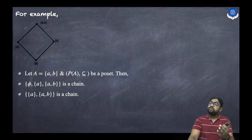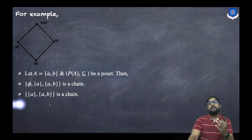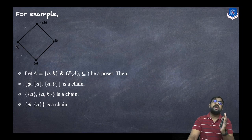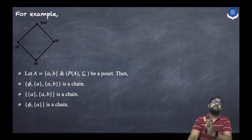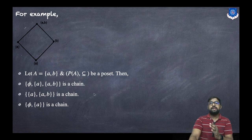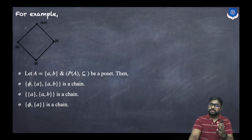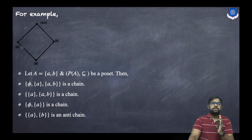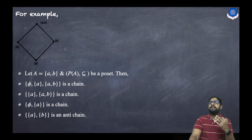In the same manner, {a} and {a,b} is also a chain — it is the smallest chain having two elements. Similarly, φ and {a} is a chain, φ and {b} is a chain, and φ, {b}, and {a,b} is also a chain. For an anti-chain, consider {a} and {b}: they are not connected or related, so that is an anti-chain.